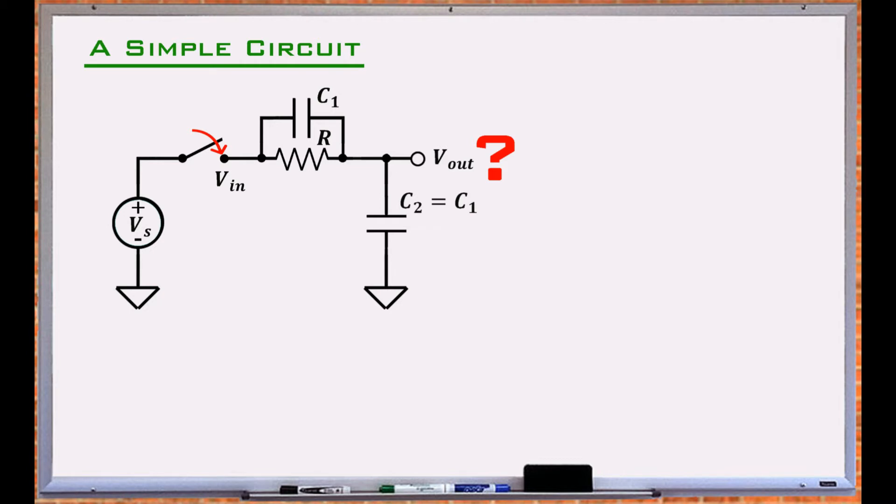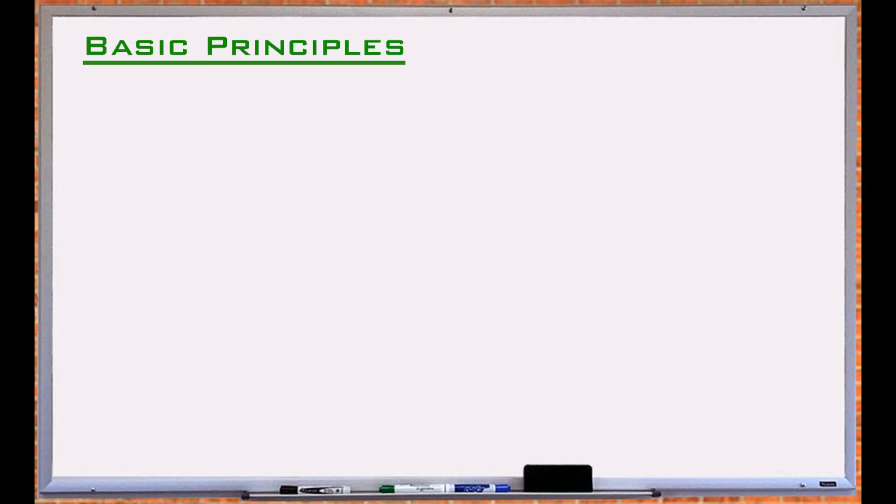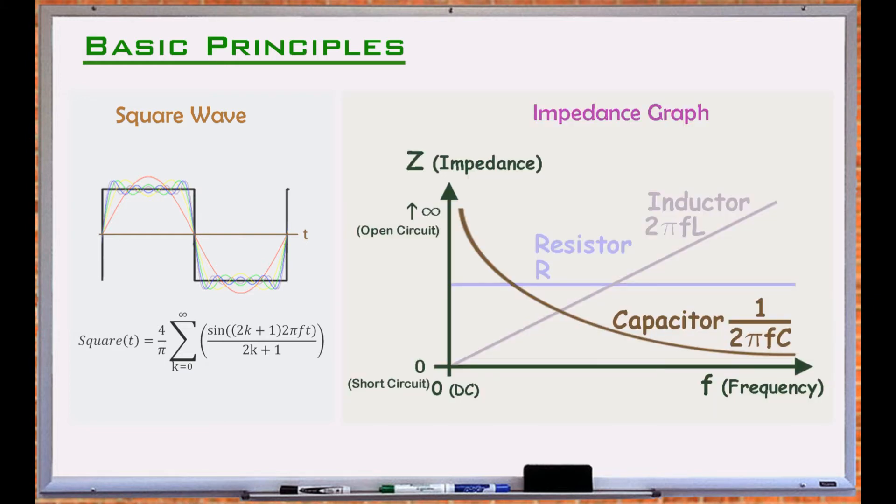To analyze the circuit we use two basic principles: a transition between two voltage levels has infinite frequency components, and the impedance of a capacitor approaches zero as the rise time decreases or the signal frequency increases.